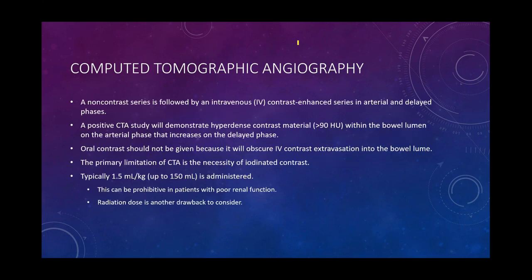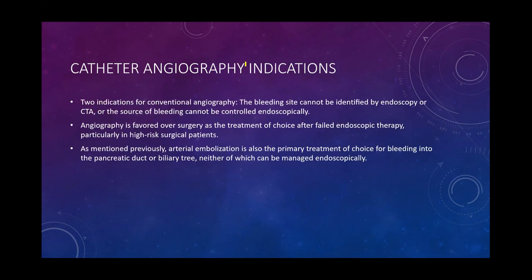The general CTA protocol includes a non-contrast series followed by IV contrast in arterial and delayed phases. You're looking for hyperdense contrast material greater than 90 Hounsfield units within the bowel lumen on the arterial phase. Avoid oral contrast, as it can obscure IV contrast extravasation. CTAs do require iodinated contrast, which can be limiting for patients with severe renal disease, and radiation exposure should be communicated to patients.